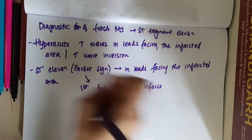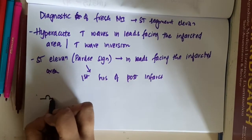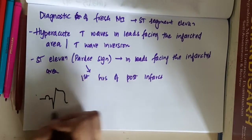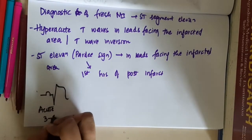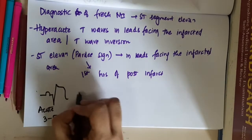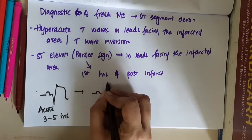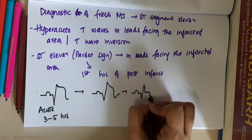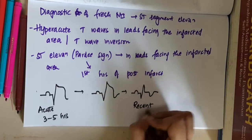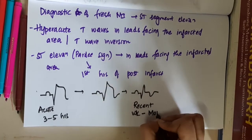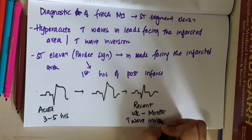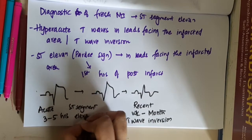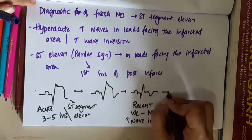Let me describe the ECG changes. In the acute phase — that is on average 3 to 5 hours — you will see ST segment elevation. Then in the recent stage, ST segment inversion will be seen later, occurring in weeks to months, where you will see T wave inversion.